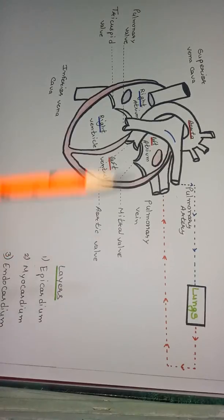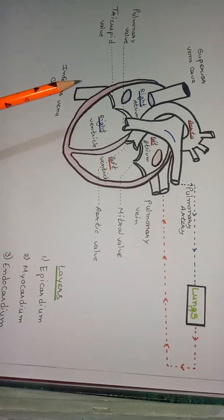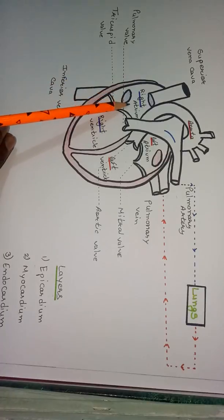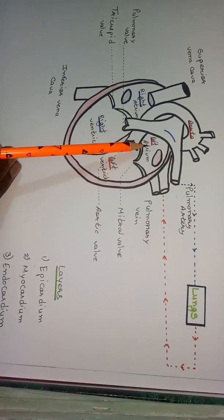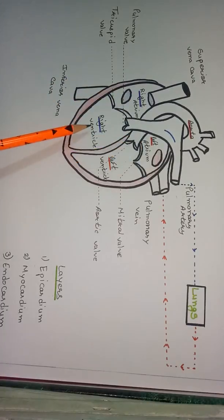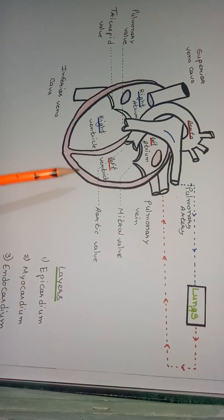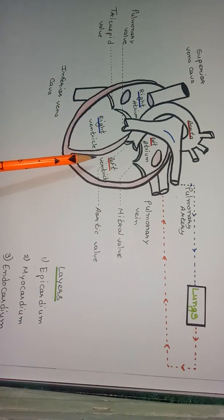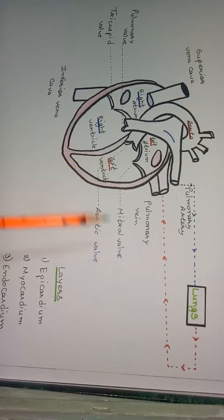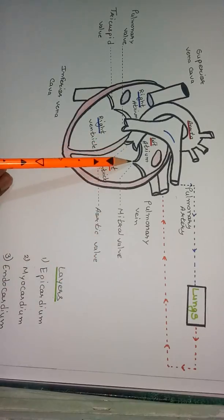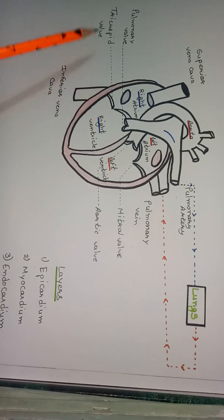This is the diagram of the human heart. From here you can see the human heart is divided into four chambers: right atrium, left atrium, right ventricle, and left ventricle. Similarly, these four chambers of the human heart have four valves.